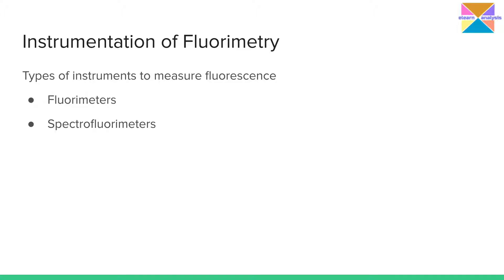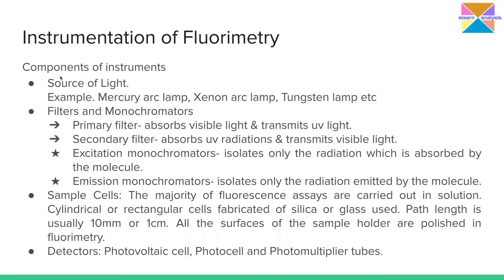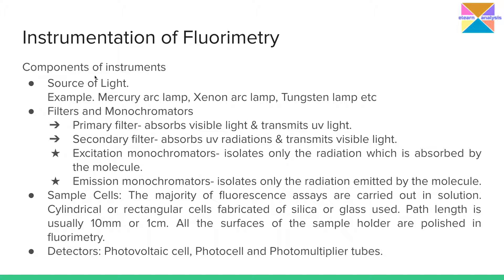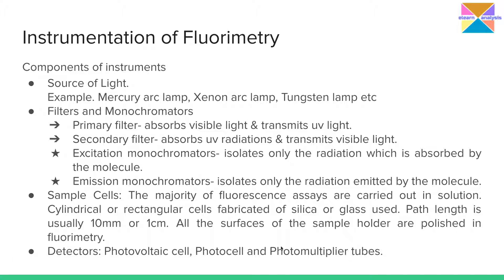Before discussing why two wavelength selectors are used, let me take you through the components of these instruments — the fluorometer and spectrofluorimeter. The first component is the source of radiation or light. The second is the wavelength selectors, which may be filters or monochromators. The third is the sample cell, and the last is the detectors. The sources and detectors are the same as those in UV-visible spectroscopy: mercury arc lamp, xenon arc lamp, tungsten lamp, and detectors such as photovoltaic cell, photocell, and photomultiplier tubes.